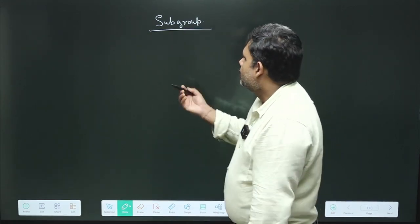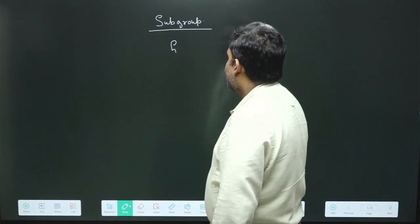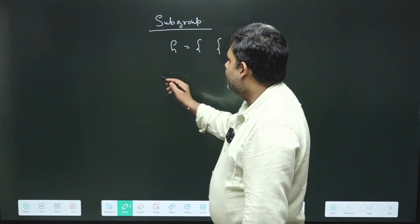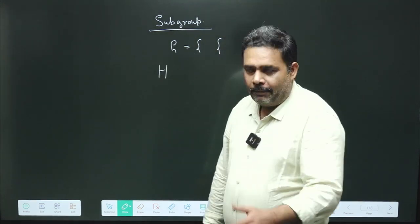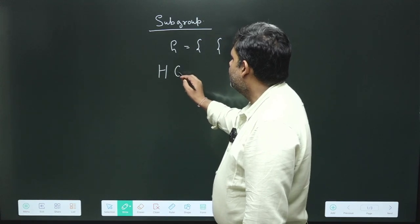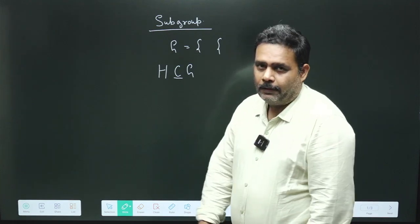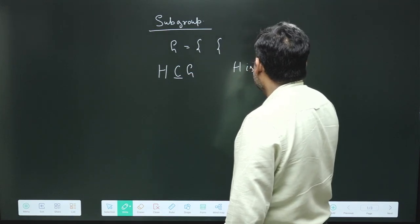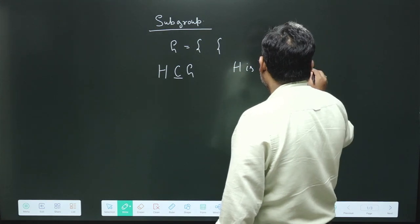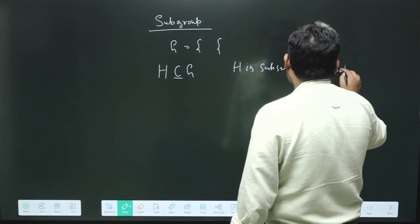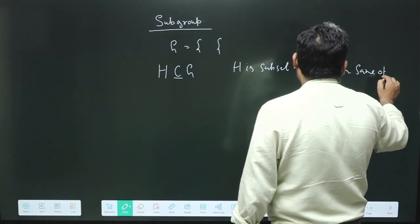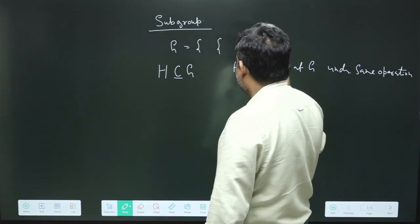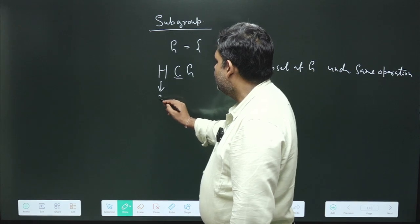So what is this particular thing? Suppose we have any group, and this group has obviously some elements and it has to be defined with some operation. What we can do is collect elements from this particular group which will be a subset of this particular group. Then H is a subset of G under the same operation, and then this H is said to be a subgroup.